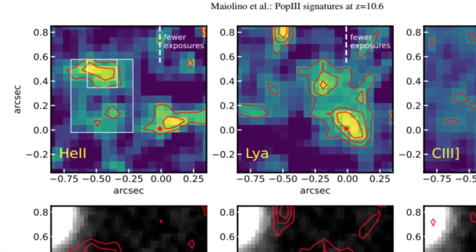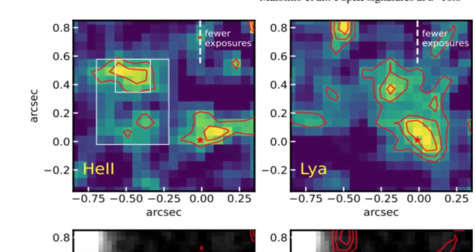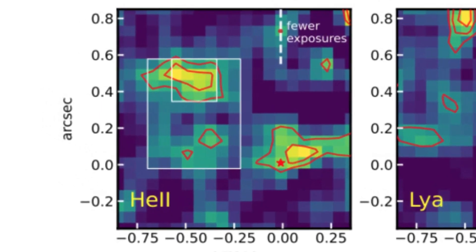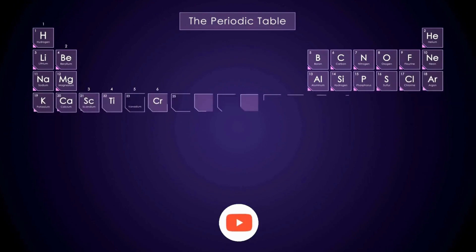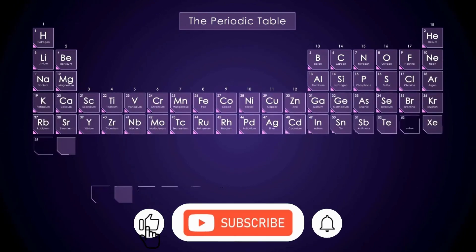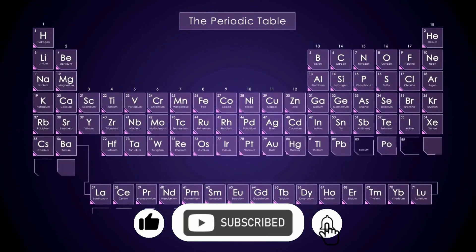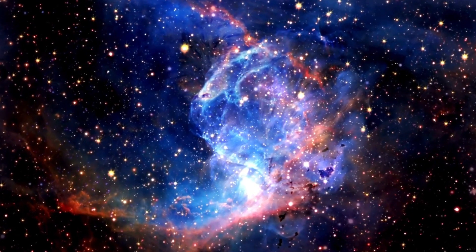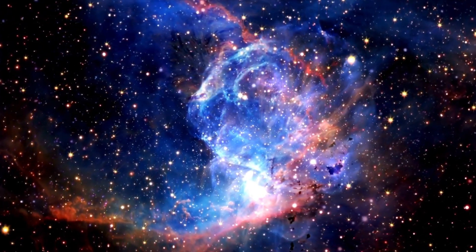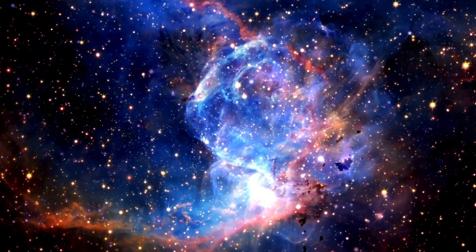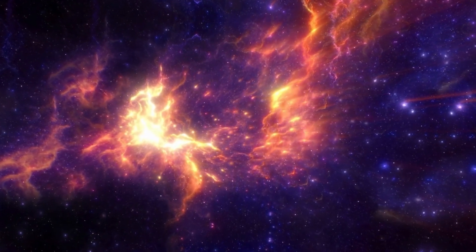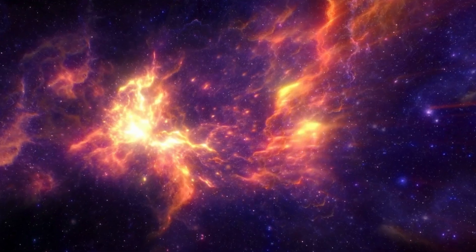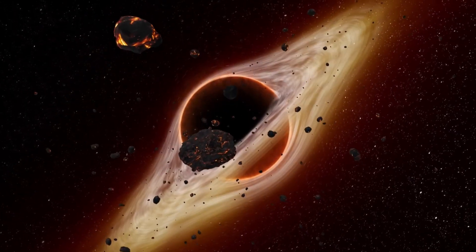Analysis also reveals the presence of hydrogen in the clump, as indicated by Lyman-alpha emission, a well-documented hydrogen signature. This suggests that the observed clump comprises a mixture of hydrogen and helium gas with minimal metal content, strongly ionized by an unknown energetic source. But what is the mysterious source behind the intense ionization of this gas clump? The energy required to ionize helium gas at such a specific wavelength typically arises from either Population 3 stars or a growing supermassive black hole.